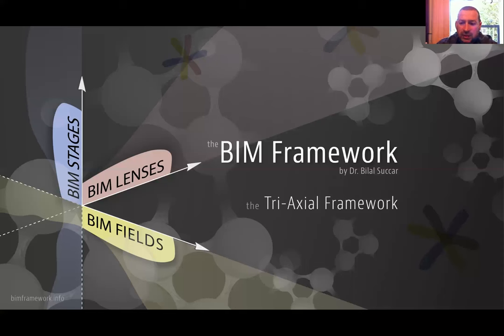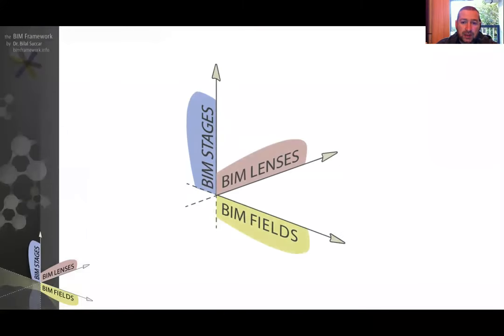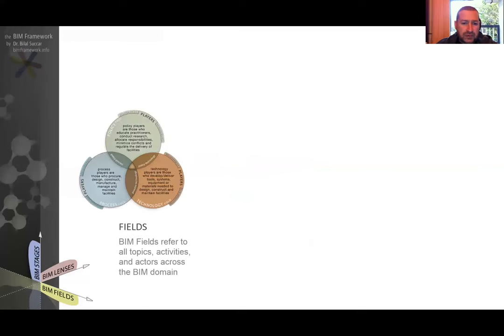Let's introduce the tri-axial framework, the most important framework within the overall BIM framework. It's called tri-axial because it includes three axes: the BIM fields axis or X-axis, BIM stages on the Y-axis, and BIM lenses on the Z-axis. Each of these axes or dimensions is represented by a specific model, which we'll cover in separate videos.